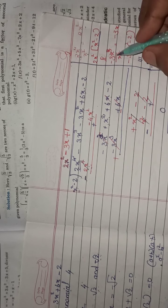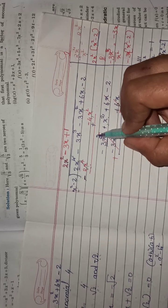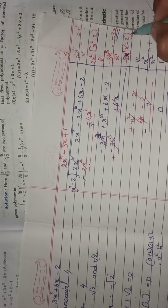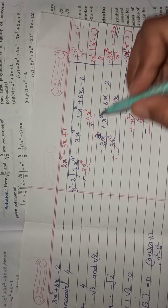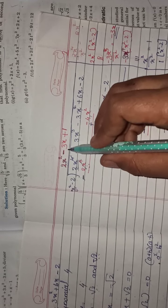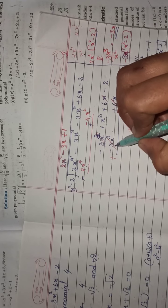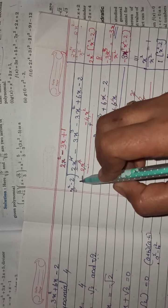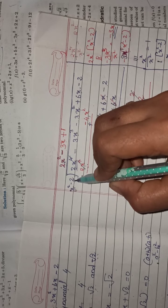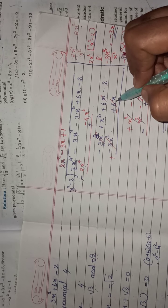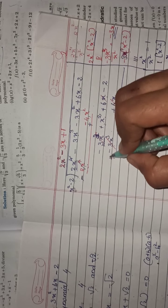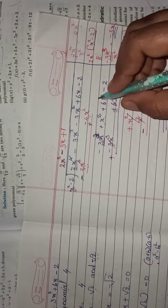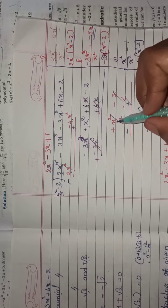Second step: the first term is minus 3x cubed divided by x squared, which gives minus 3x. So, minus 3x multiplied by x squared minus 2: minus 3x into x squared equals minus 3x cubed. Then, minus 3x into minus 2 — minus into minus is plus — equals 6x, written in the third column. After subtraction with sign change, minus 3x cubed and plus 3x cubed cancel. Plus 6x and minus 6x also cancel. Remaining: x squared minus 2.